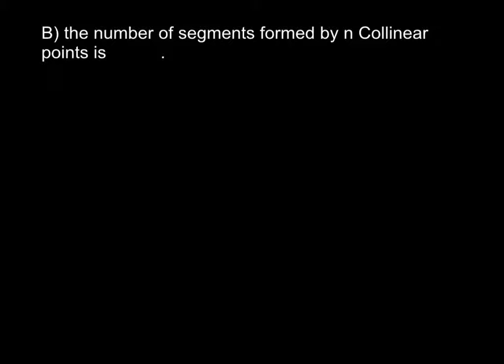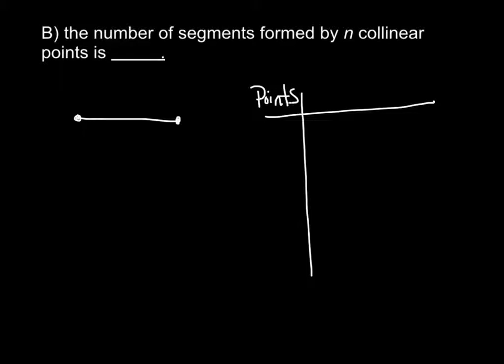The next example. The number of segments formed by n collinear points is blank. So here's what you have to do. We're talking about segments. Collinear means they make a line. So let's start off with an example. How many segments did I just use? I made one segment. How? Well, how many points did I use? I used two points. And two points gave me one segment.